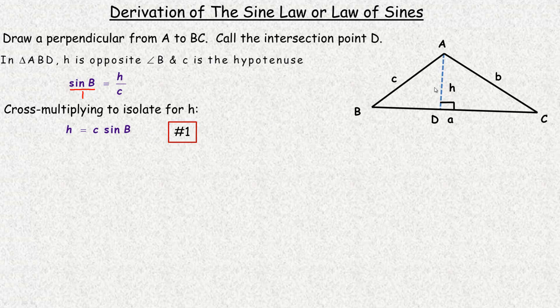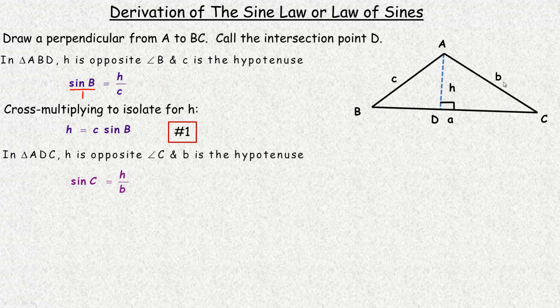Next we're going to work in this triangle over here. So in triangle ADC, H is across from angle C, so H would be the opposite side, and b would be the hypotenuse because it's across from the right angle again. So opposite and hypotenuse is sine again. So the sine of angle C would equal the opposite H over the b hypotenuse.